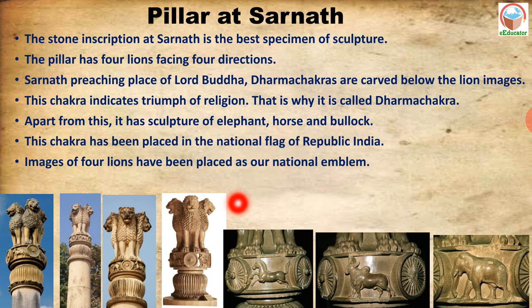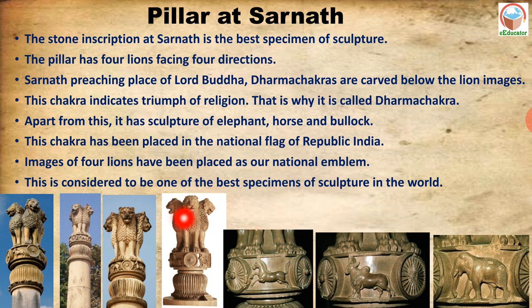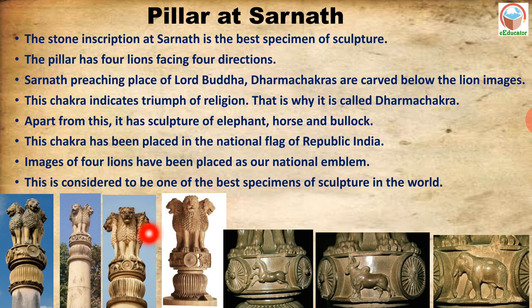The elephant, horse and bullock are also parts of India's national emblem. This pillar of Sarnath with its four lions facing four directions is considered one of the best specimens of sculpture in the world. The carving, the skill and the sculpture make it one of the greatest works of art.